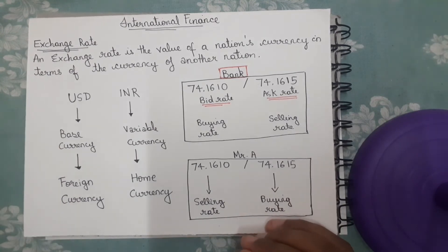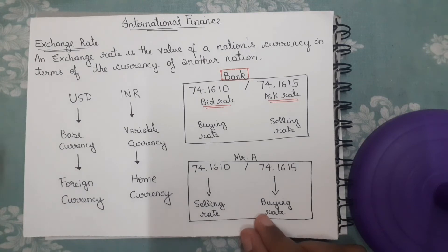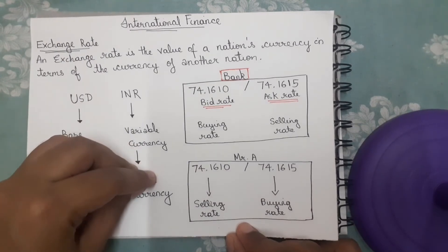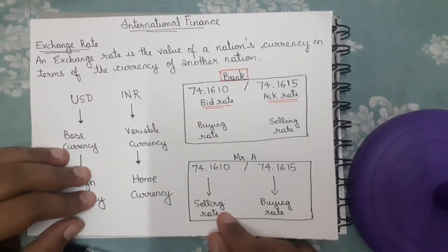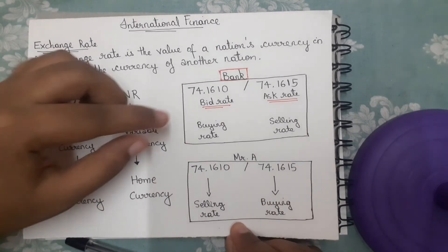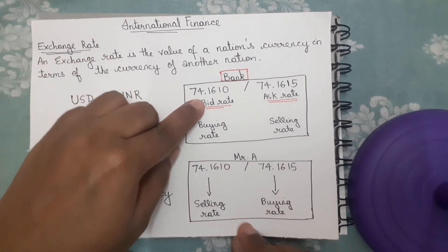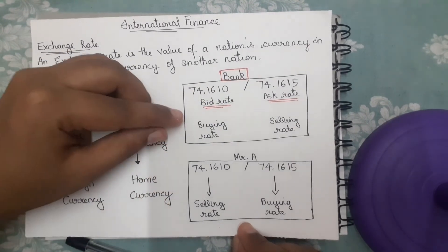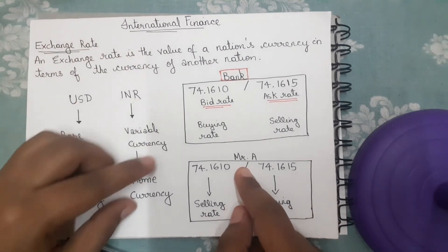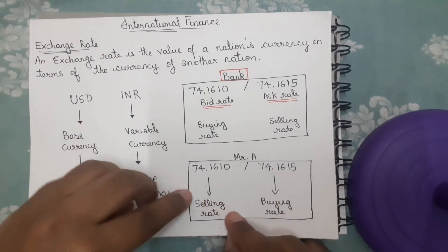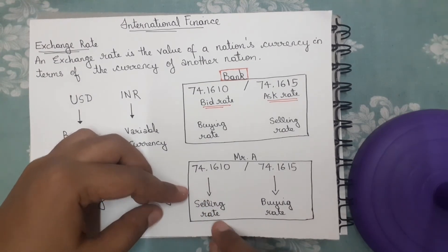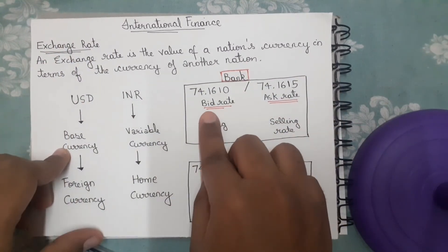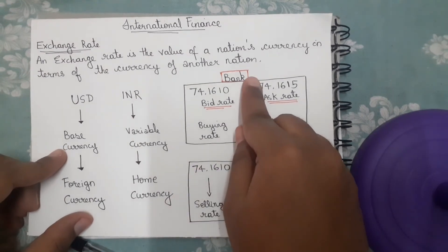After his business, Mr. A came back to India and wants to convert his US dollars into Indian rupees, so he goes to the bank. Now the bank buys those US dollars at the bid rate — 74.1610 rupees. For Mr. A, 74.1610 is his selling rate. So bid and ask rates are always represented from the bank's perspective.